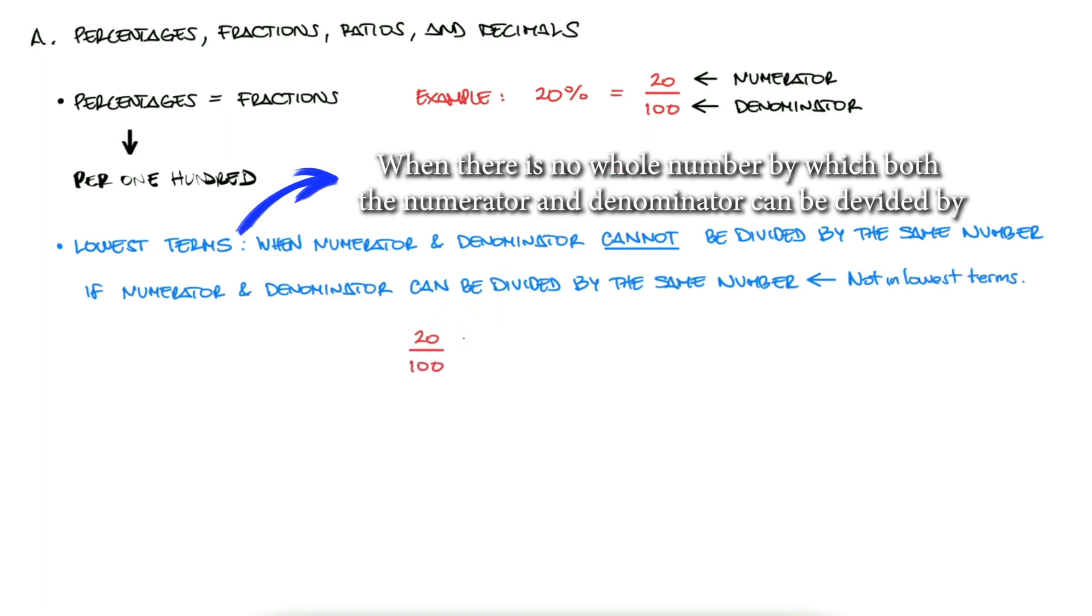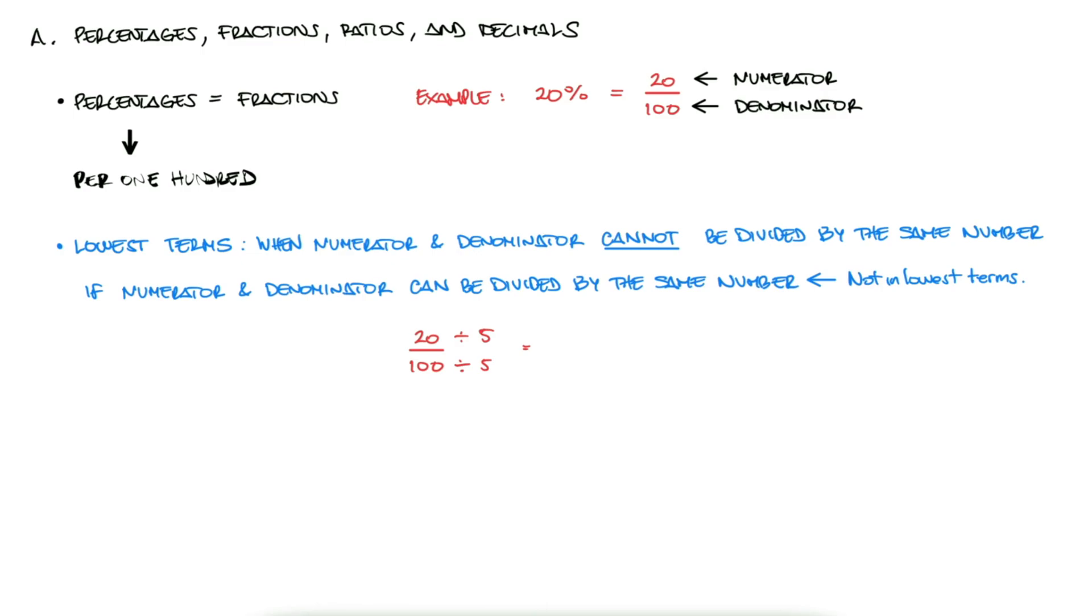For example, 20 and 100 can both be divided by 5, and therefore 20 over 100 is the same as 4 over 20. And again, since both 4 and 20 can be divided by 4, 4 over 20 can be written as 1 over 5 or 1 fifth. 1 fifth would be the lowest terms version of the fraction 20 over 100.